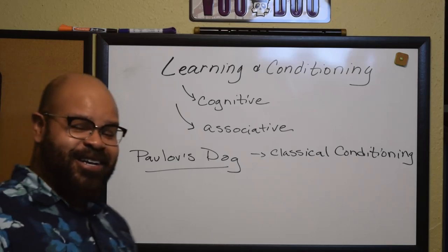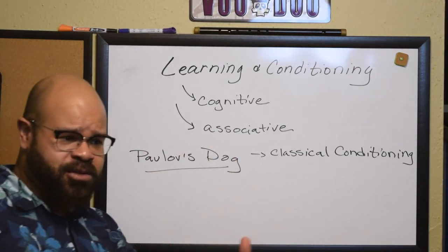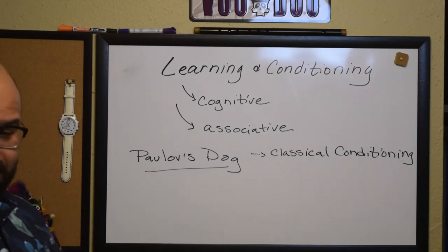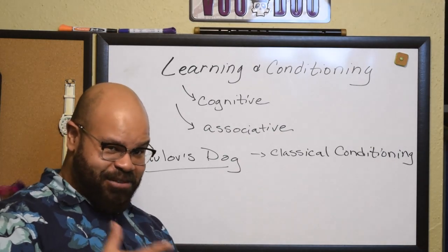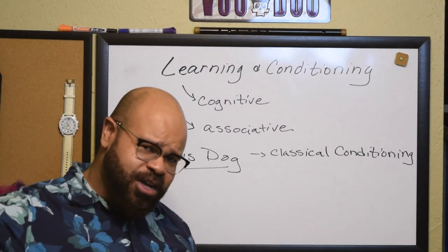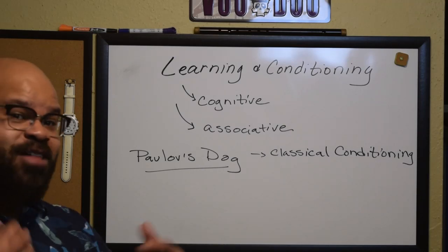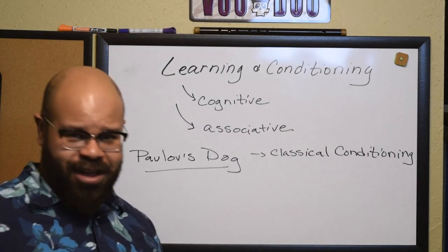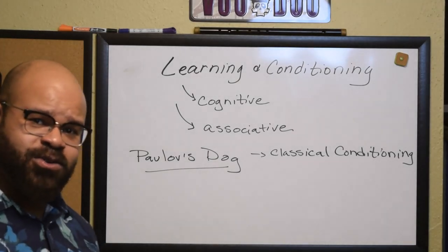Pavlov noticed this and devised an experiment to figure out what was going on. Before this, we only thought about cognitive learning — we thought that only humans would be able to expect such things because we could tell ourselves that something is about to happen. But really, what tends to be happening is that you've gained a physiological or unconscious expectation of events about to occur, and then you explain that excitement to yourself. Animals seemed to know food was coming even without being able to tell themselves it was.